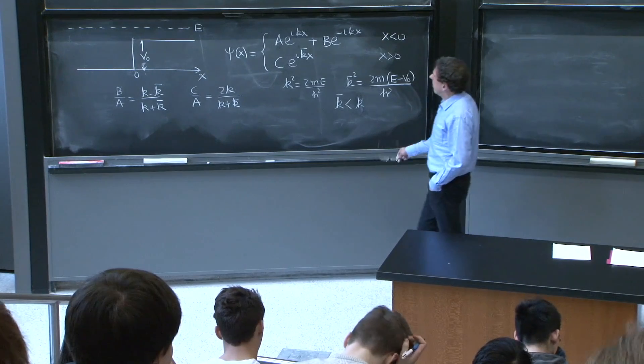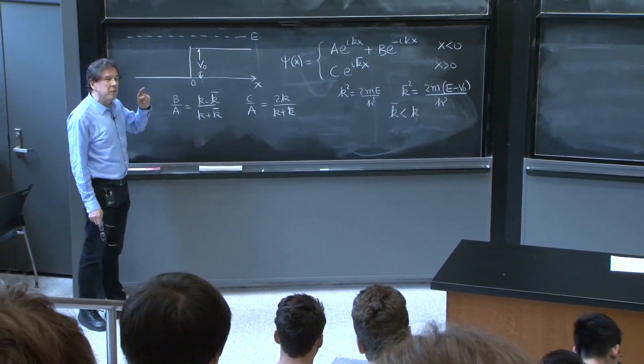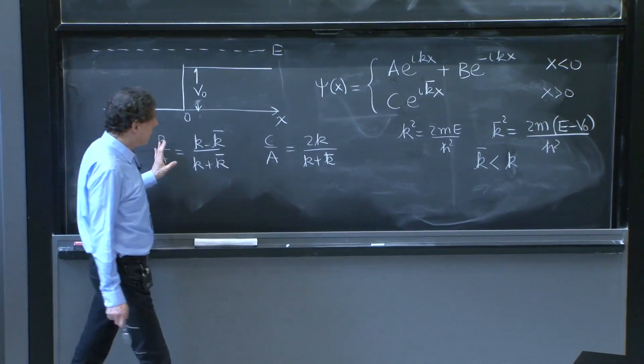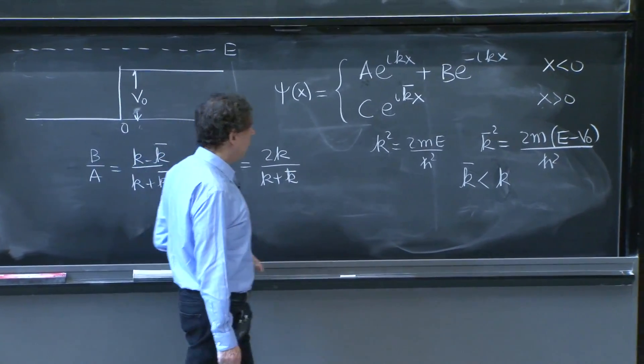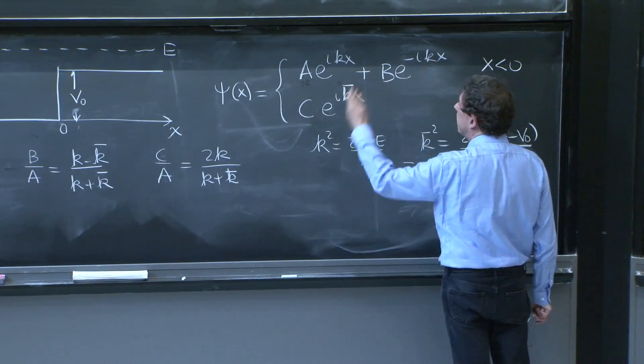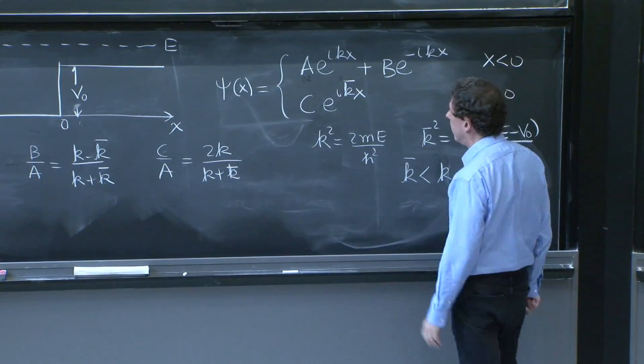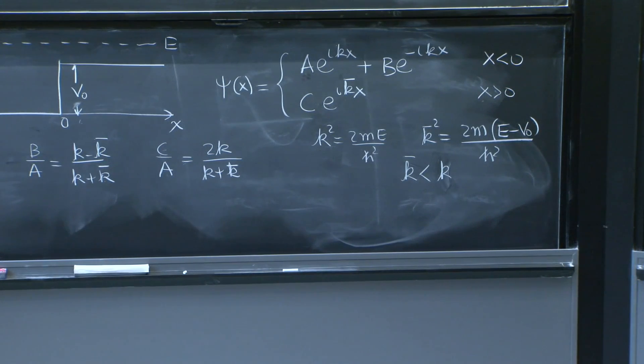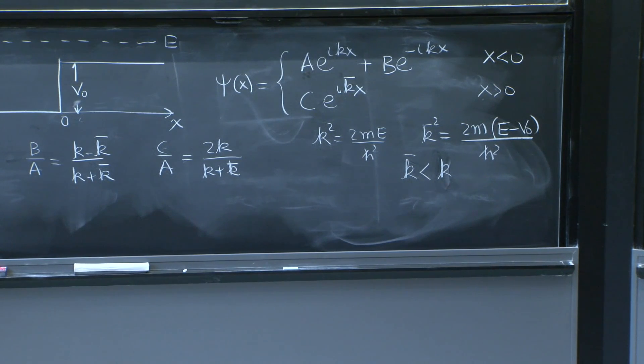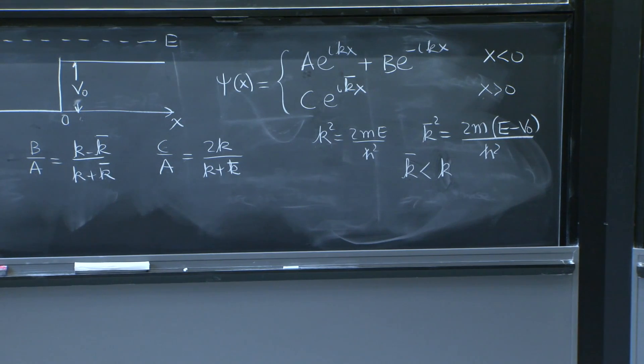So we looked at the conditions of continuity of the wave function and continuity of the derivative of the wave function at x equals 0. Those were two conditions. And they gave you these expressions for the ratios of C over A and B over A. We could even imagine, since we can't normalize this, setting A equal to 1 and then calculating B and C from those numbers. We have two k's, a k and a k̄. The k is relevant to the wave function for x less than 0. The k̄ is relevant for x greater than 0.